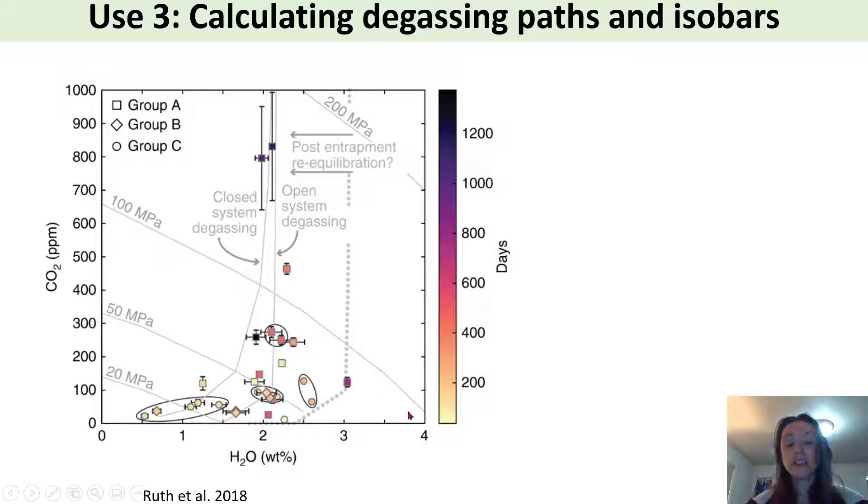So you can lie these on the plot and you can look at where your melt inclusions lie relative to these pressure lines and then as Dawn Ruth has done here you might want to overlay degassing paths to see if that helps explain the distribution of your melt inclusion pressures.